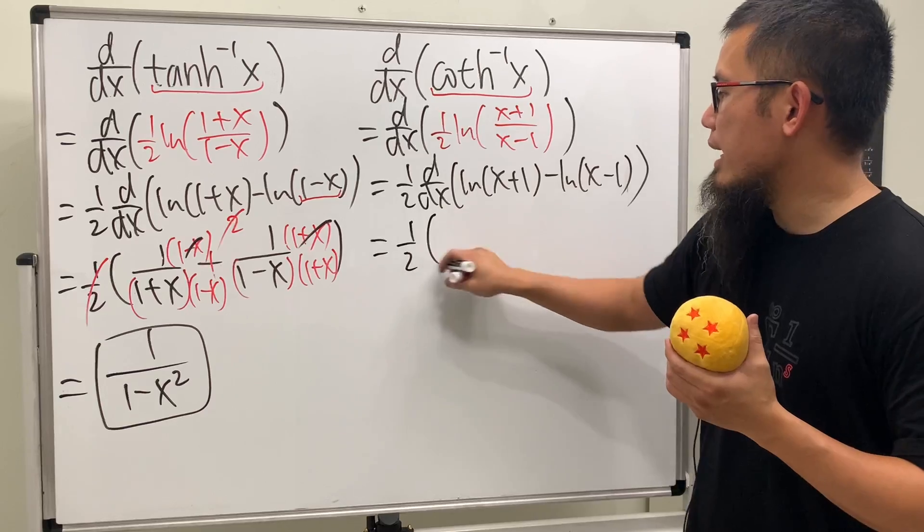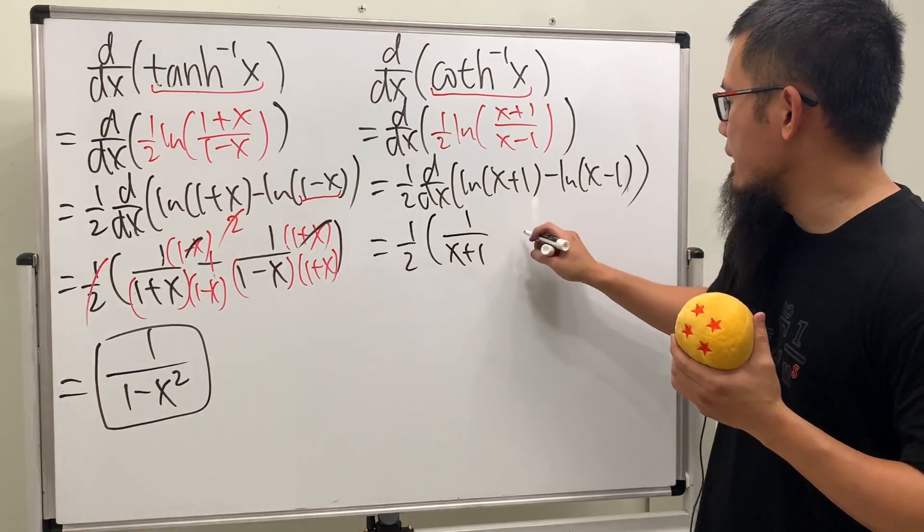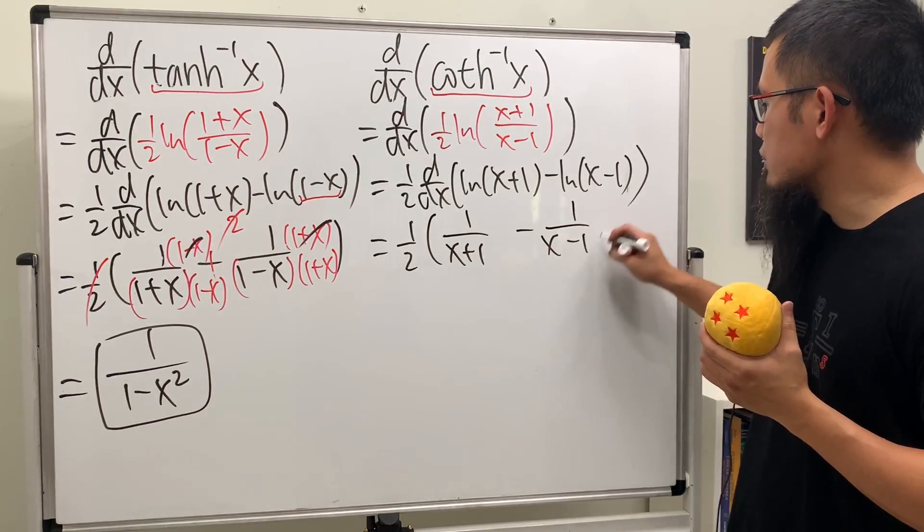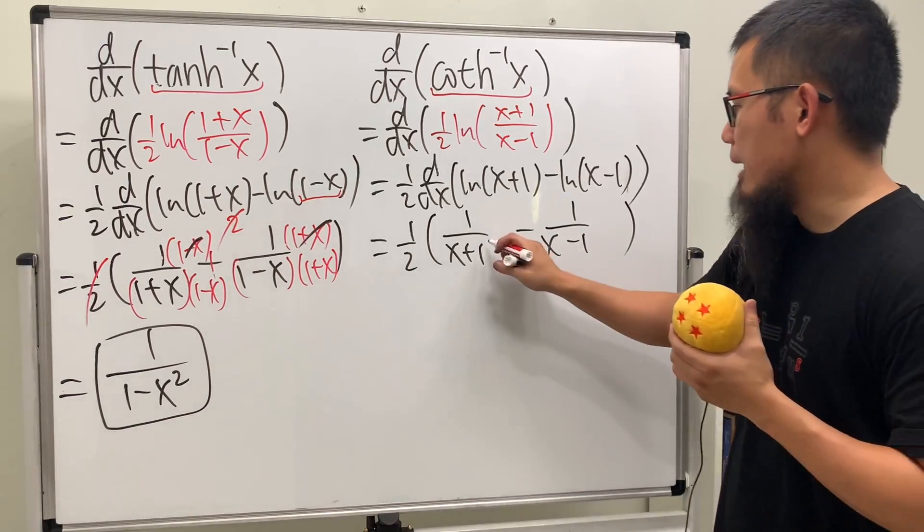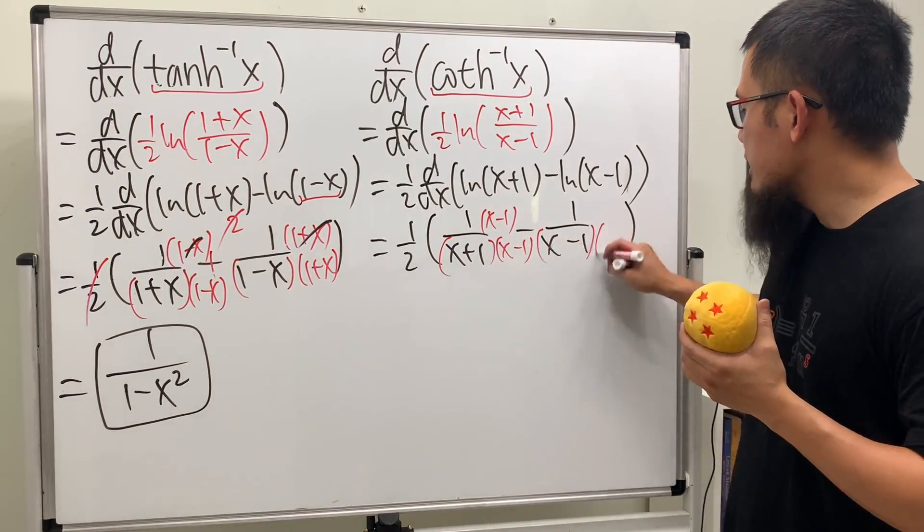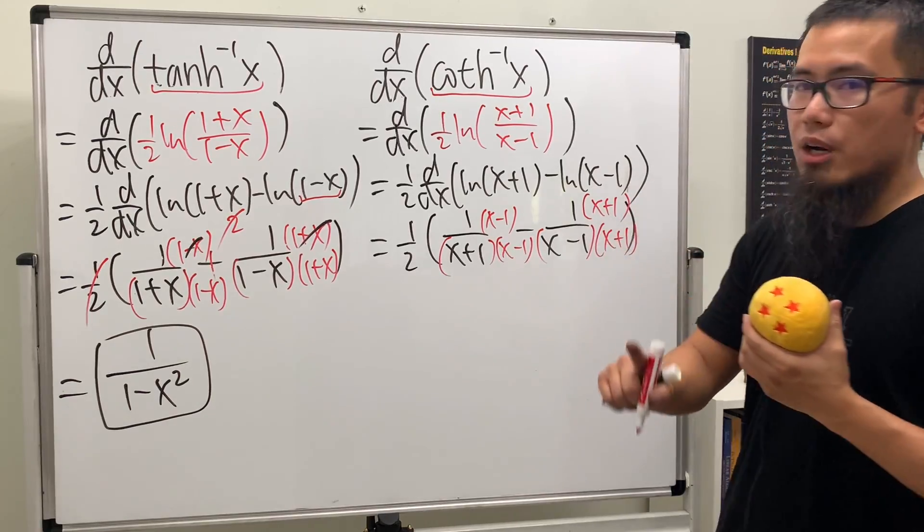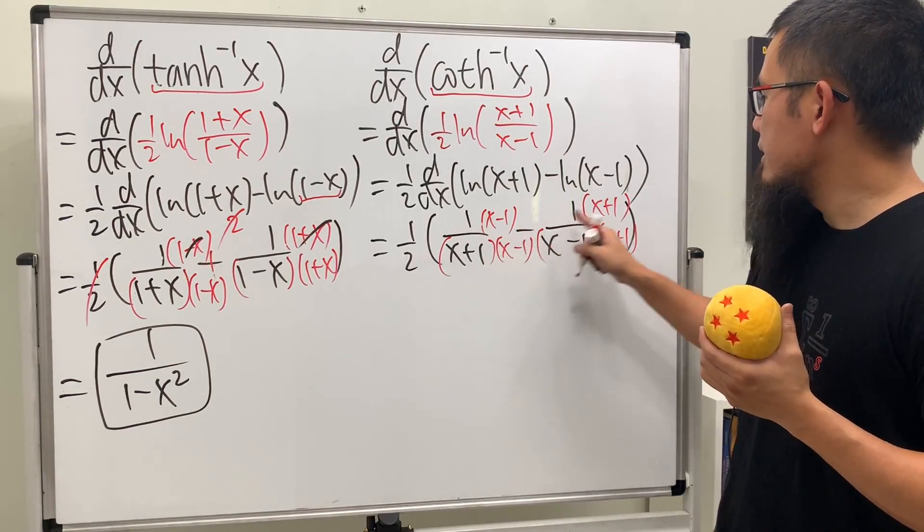This right here is going to be 1/2, and then we will get 1/(x+1) and then minus 1/(x-1). Of course, get the common denominator again. So this is (x-1) here and (x-1) here. Now check this out: here we have x minus x so they cancel out.